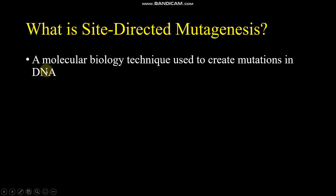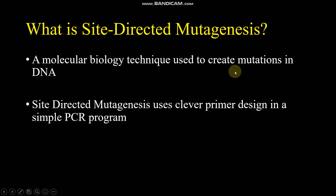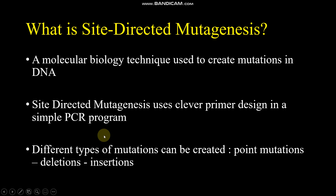Site-directed mutagenesis is a molecular biology technique used to create mutations in DNA. The method uses clever primer design in a simple PCR program. Different types of mutations can be created, like point mutations, deletions, and insertions.